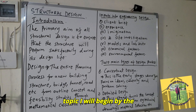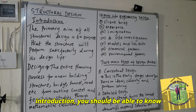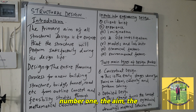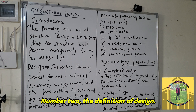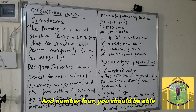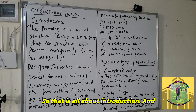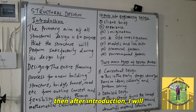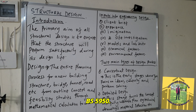Under this topic I will begin with an introduction. By the end of this introduction you should be able to know: number one, the primary aim of structural design; number two, the definition of design; number three, design philosophy; and number four, design loads — that is live load and dead load. After introduction, I will start designing: number one, reinforced concrete to BS 8110, and number two, steel design to BS 5950.